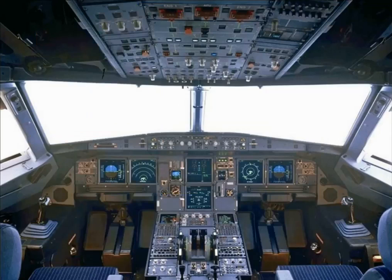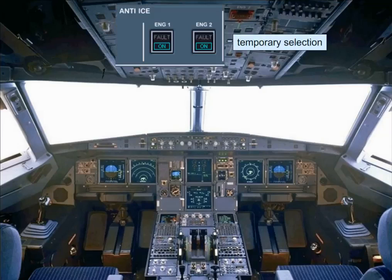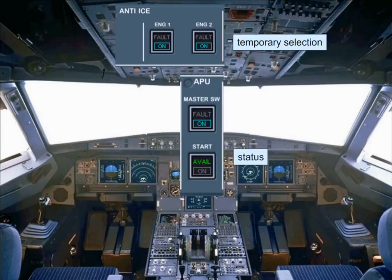On the overhead panel, some push button switches are used on a temporary basis, or may have an indication of their state. The logic is: temporary selection for operational reasons — blue ON light, for example anti-ice. Applicable system status — green light, for example APU available. You will see this philosophy demonstrated throughout the course.